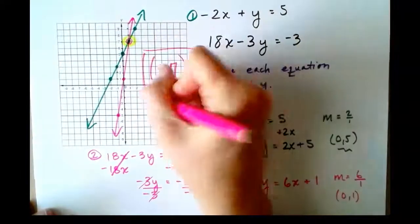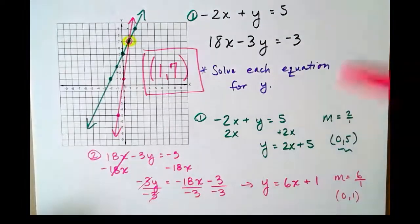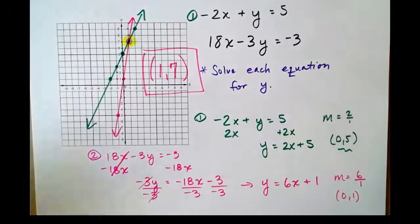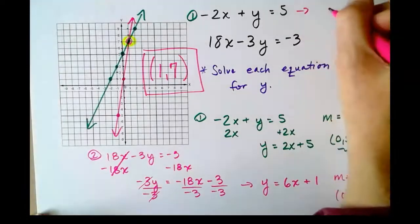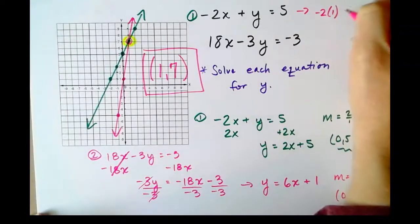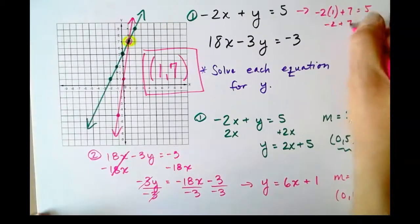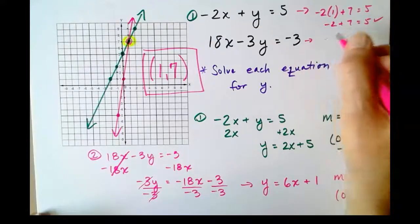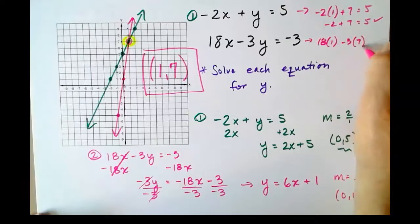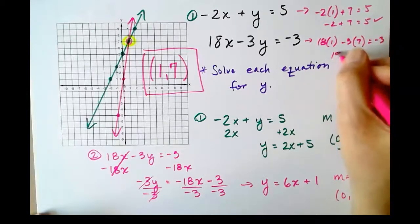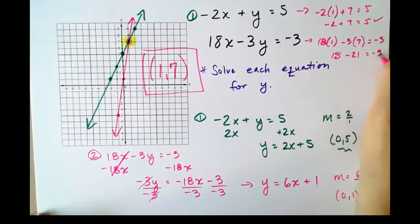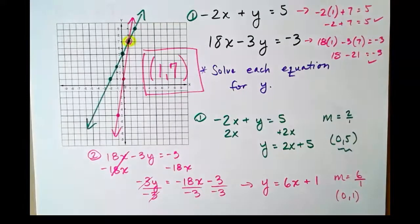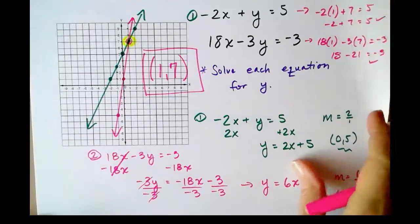These two lines intersect at exactly one and only one point, and that point is over 1, up 7, and that is our solution. That will make both of these equations true at the same time. Let's give them a quick check. So -2 times 1 plus 7, does it equal 5? It does indeed. It checks into the second one. That will be 18 times 1 minus 3 times 7, does it equal -3? 18 minus 21 does indeed equal -3. They both check. That is solving by graphing.